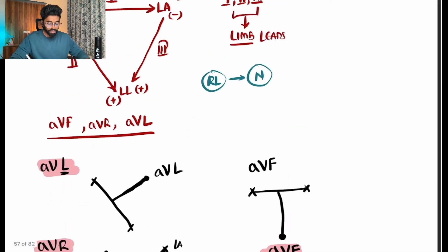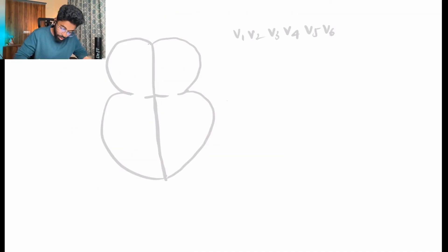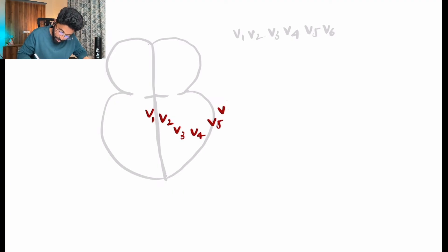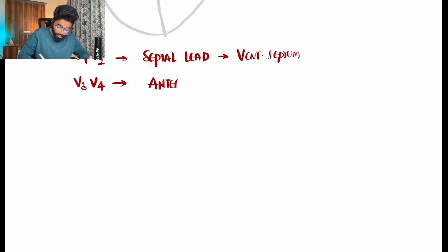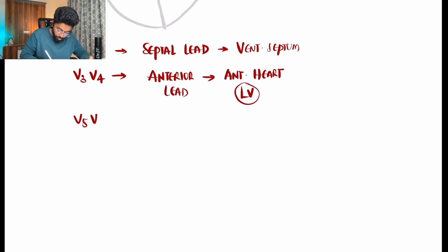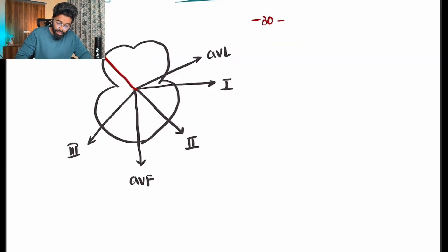The chest leads are V1, V2, V3, V4, V5, and V6. V1 and V2 are septal leads. V3 and V4 are anterior leads looking at the anterior chest wall. V5 and V6 are lateral leads looking at the lateral side of the heart.